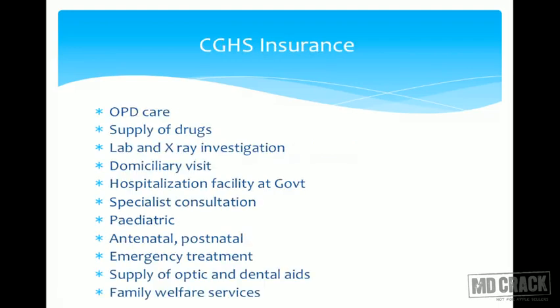Coming to the CGHS — Central Government Health Scheme — the services offered include: OPD care, supply of drugs, lab and X-ray investigations, domiciliary visits, hospitalization facility at government hospitals, specialist consultation, pediatric consultation, antenatal and postnatal care, emergency treatment, supply of optical and dental aids, and family welfare services.